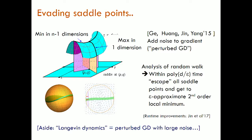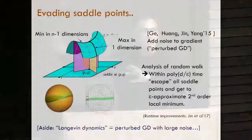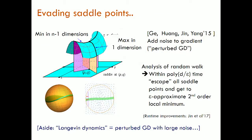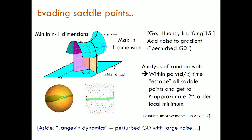As an aside, physicists are interested in Langevin dynamics, which is perturbed gradient descent with large noise. You might wonder — I said you train neural nets with gradient descent, and now I'm talking about perturbed gradient descent. The hypothesis is that stochastic gradient descent already has enough noise that it acts like perturbed gradient descent. The Langevin folks also suggest that stochastic gradient descent inherently has enough noise to act like Langevin dynamics.